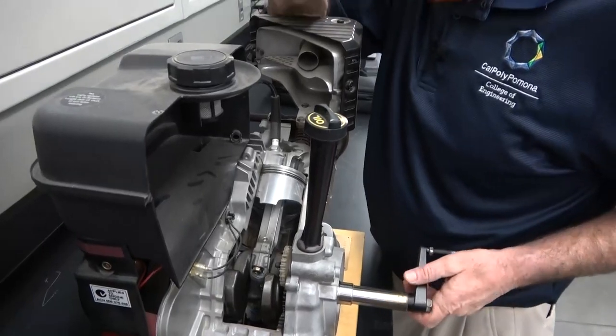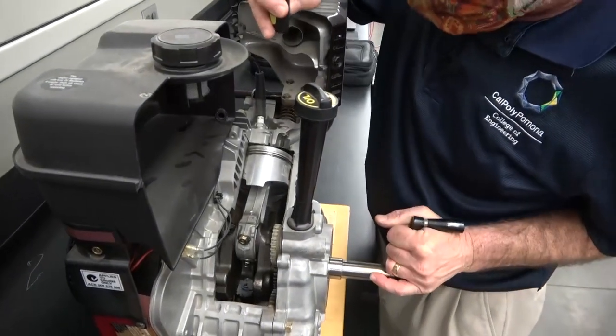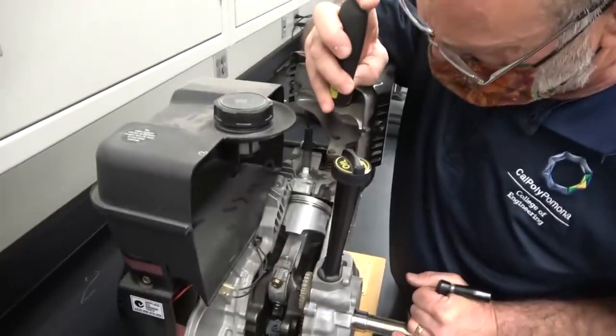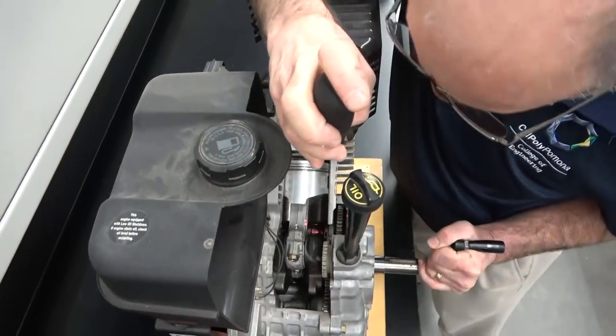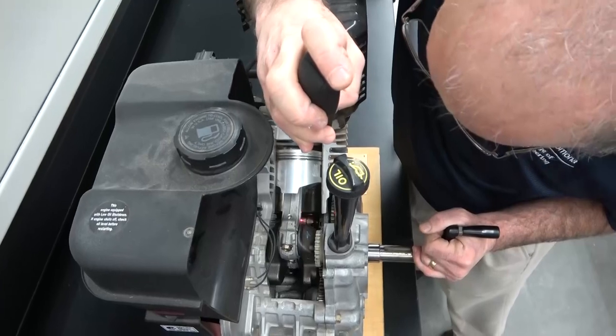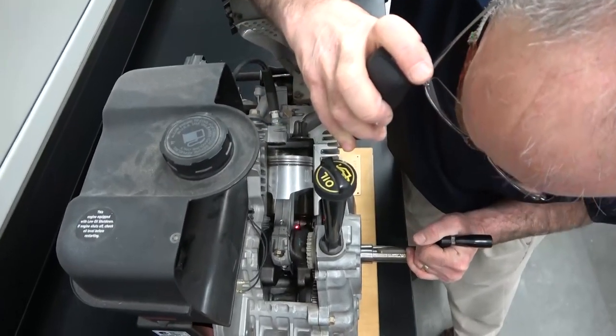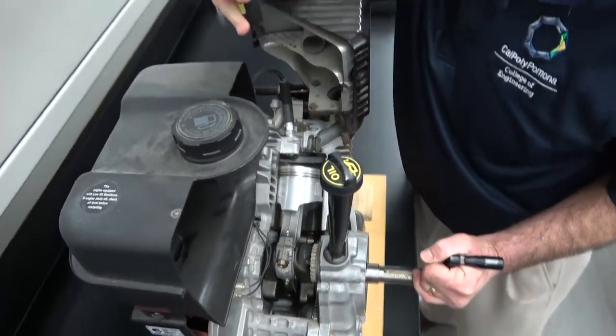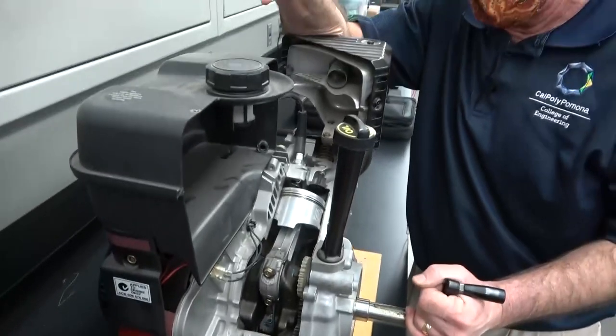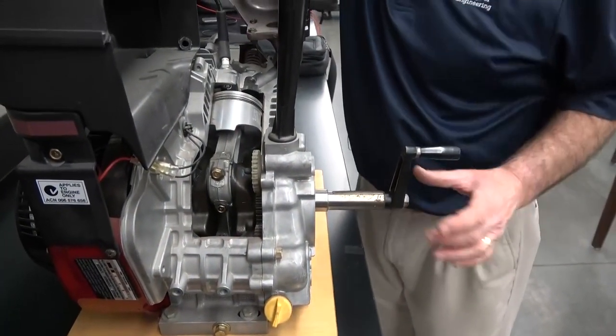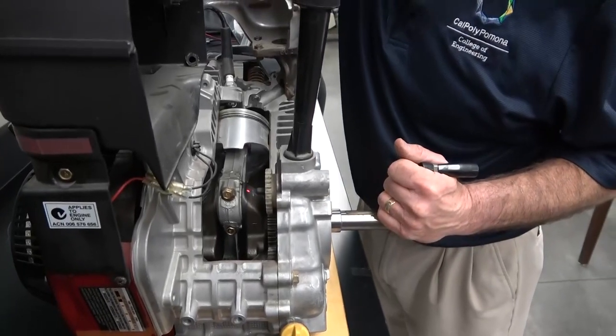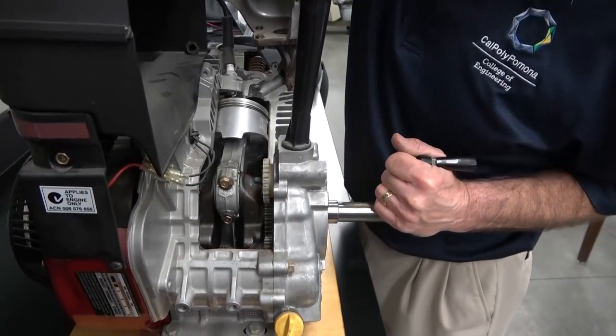If we look down, you can see the camshaft way down in there. It's really hard to tell, but this camshaft is geared—it has a timing gear right in here as opposed to a timing chain or timing belt. So the gear connects the crankshaft with the camshaft.